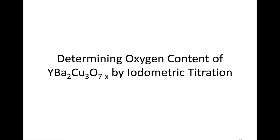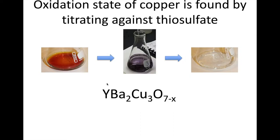We've looked at the phases present. We also want to determine the oxygen content — the 7 minus x or 7 minus delta. The way we can do this is through a titration. This may be a different type of titration than you've done in chemistry classes, so we'll go over it a bit. This is an iodometric titration, and we're not directly solving for oxygen content directly.